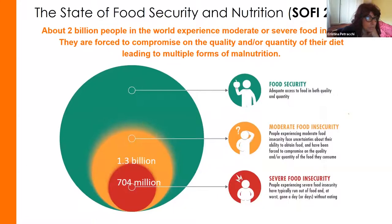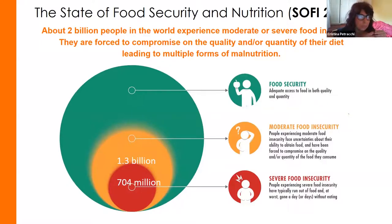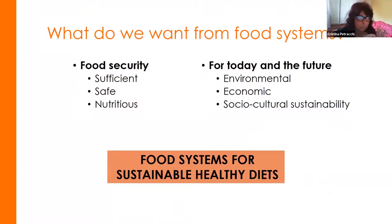It is estimated that over 2 billion people — or 26% of the world population — do not have regular access to safe, sufficient, and diverse food. This includes people with severe food insecurity associated with hunger and those with moderate food insecurity. The poor quality of their diets puts these people at greater risk of multiple forms of malnutrition and poor health. Taking a food systems approach, we are promoting food security in the broad sense.